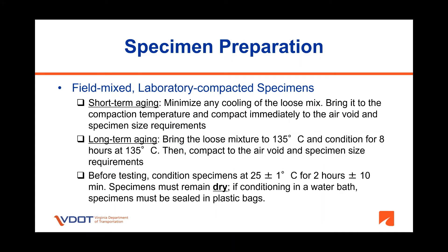Specimen preparation procedure for field mix, lab compacted specimens. For short-term aging, bring the loose mix to the compaction temperature and compact immediately to the air void and specimen size requirements. For long-term aging, bring the loose mixture to 135°C and condition for 8 hours at 135°C, then compact to the air void and specimen size requirements. Once specimens are made and cooled down, the same conditioning procedure indicated for the lab mix lab compacted specimens applies. Once conditioning is done, testing can start.